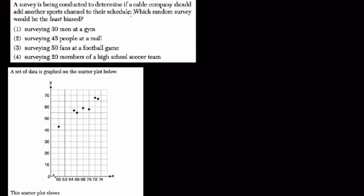A survey is being conducted to determine if a cable company should add another sports channel. Which random survey would be the least biased? With every survey, you're trying to represent the most people possible from the least amount of information. So your information should be diverse and not representative of only a certain group. Surveying 30 men at the gym is not going to be great, because it's only surveying men. Surveying 45 people at a mall might be pretty good, although it is dealing only with shoppers. Surveying 50 fans at a football game, they're all at a football game, they're going to want more football. It's too biased. Surveying 20 members of a high school soccer team, they're soccer fans, so choice two is the most diverse, or least biased.